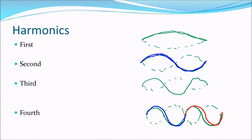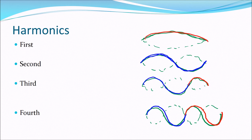The fourth harmonic contains two wavelengths, drawn in different colors. The third harmonic has one and a half wavelengths, and the first harmonic is only half a wavelength.